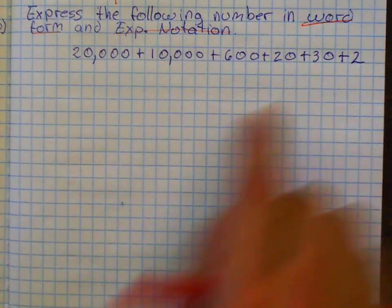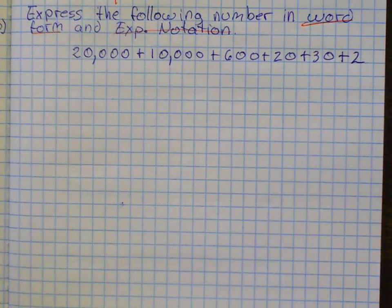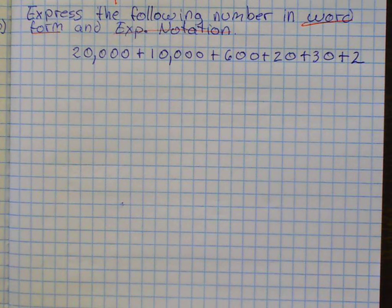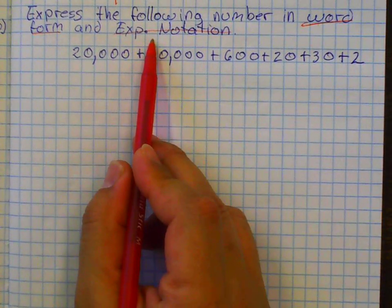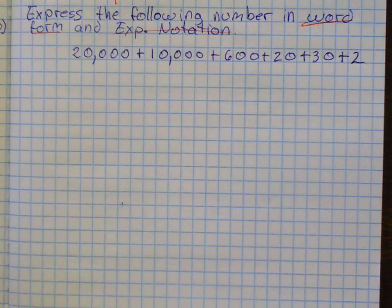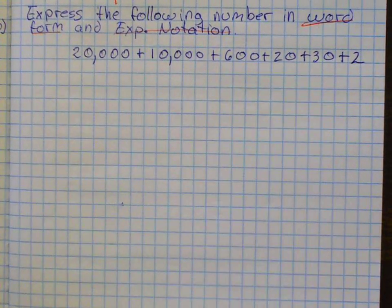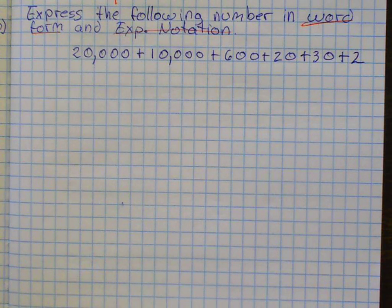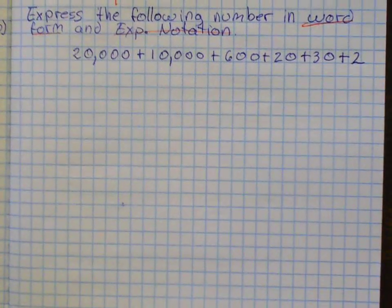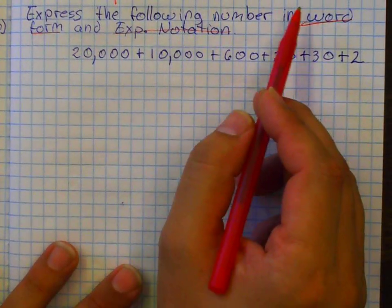First of all, how are they giving me the number that I have to change? Which of these four are they using to give me my number? They're asking me for the word form and the expanded notation. How is the number given? Is this the standard form, the expanded form, or the expanded notation? My number is this number. They're giving me the expanded form, because it's the value of each digit. So I have my number in expanded form, and I need to change it to words and expanded notation.